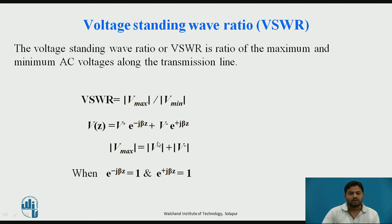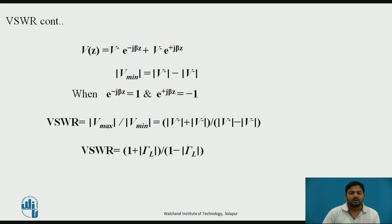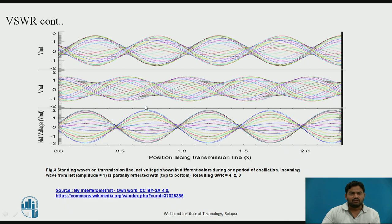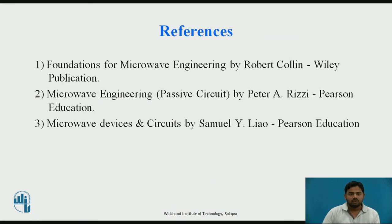Next is the voltage standing wave ratio (VSWR). VSWR is the ratio of the maximum voltage magnitude to the minimum voltage magnitude. Solving for voltage maximum and minimum gives: VSWR equals one plus the magnitude of the reflection coefficient divided by one minus the magnitude of the reflection coefficient. There are three cases with different VSWR values — the third case has the highest voltage standing wave ratio. When the load is perfectly matched, there is no reflection, and when the load is purely reactive, the input impedance is also purely reactive.